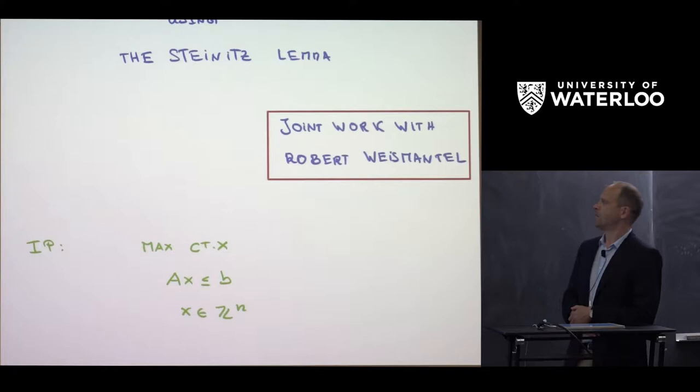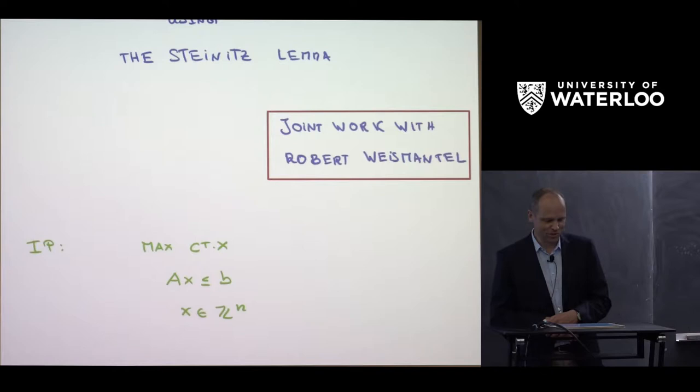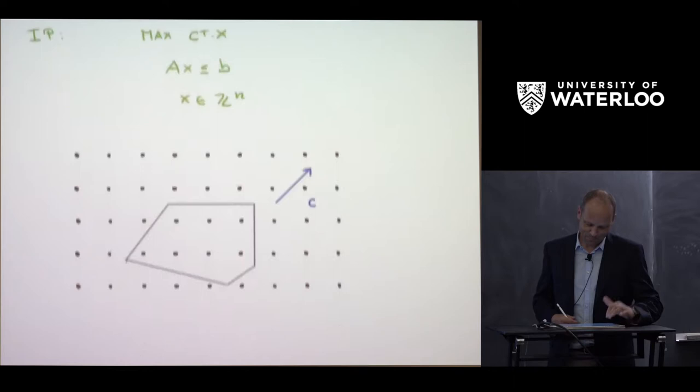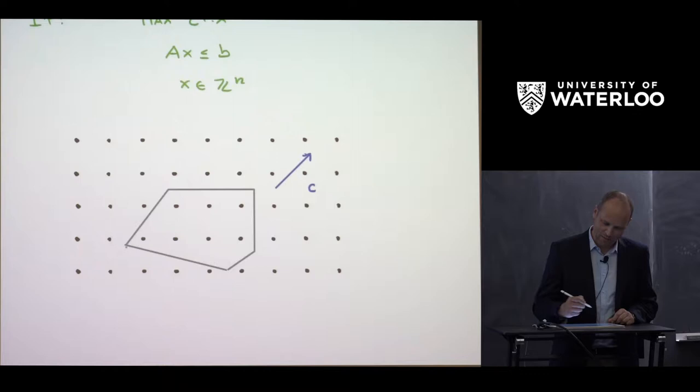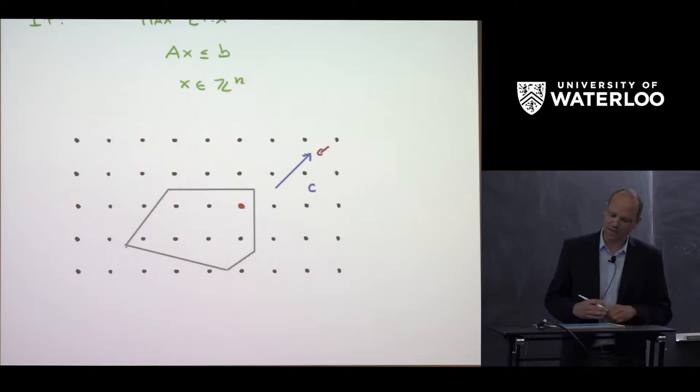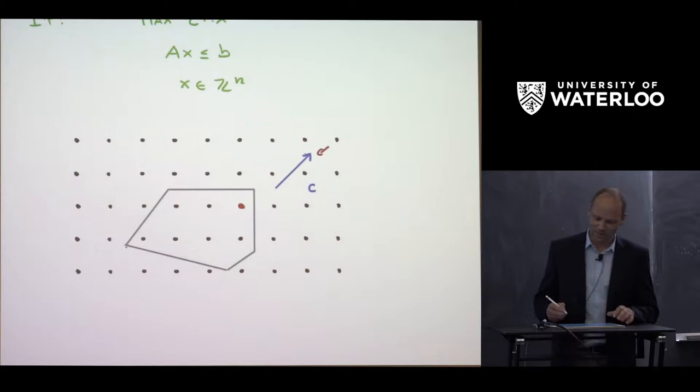What's the subject? We have an optimization problem of the form: maximize c-transpose times x, Ax less than or equal to b, and x has to be integer. That's the well-known integer programming problem. We have a polyhedron describing our feasible points, this is the objective function, and we try to find a point that is integral and feasible, satisfying all the constraints, and maximizing the objective function value c-transpose times x.